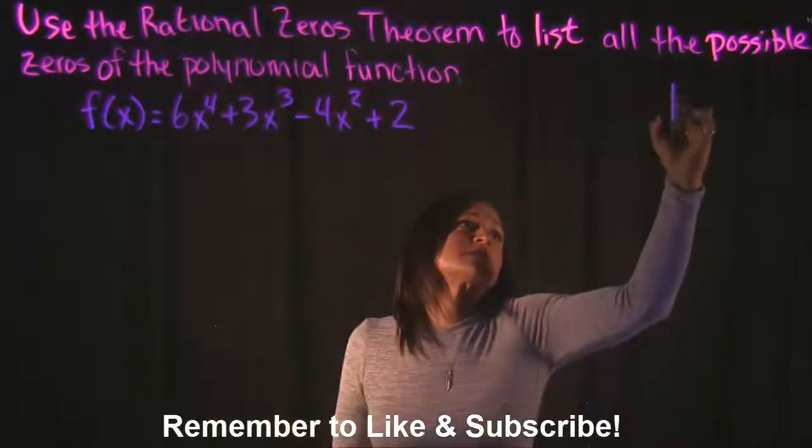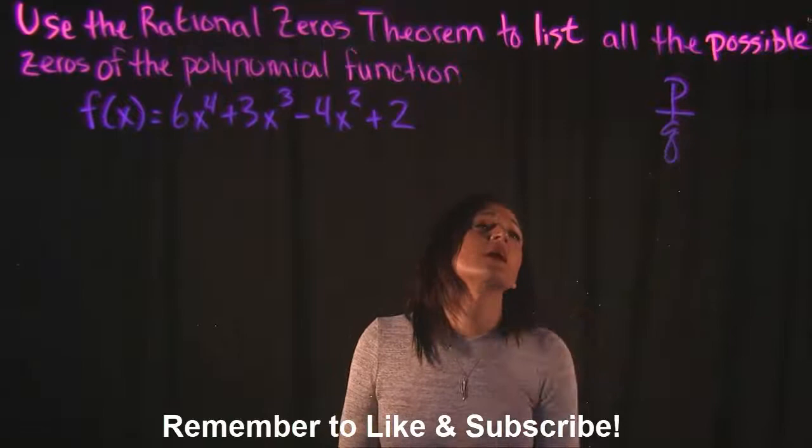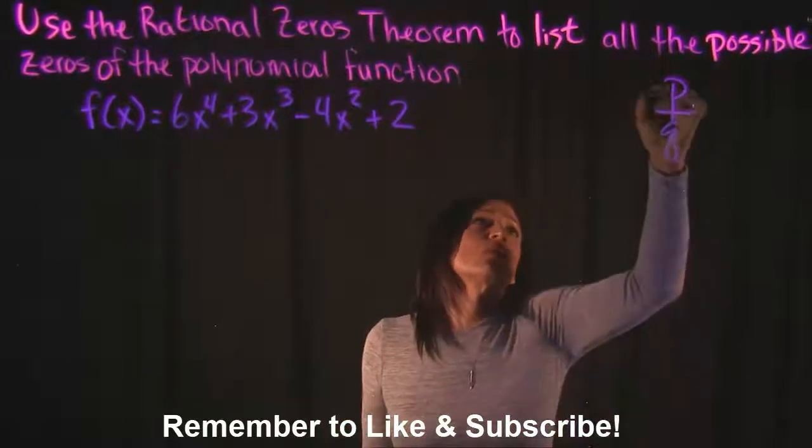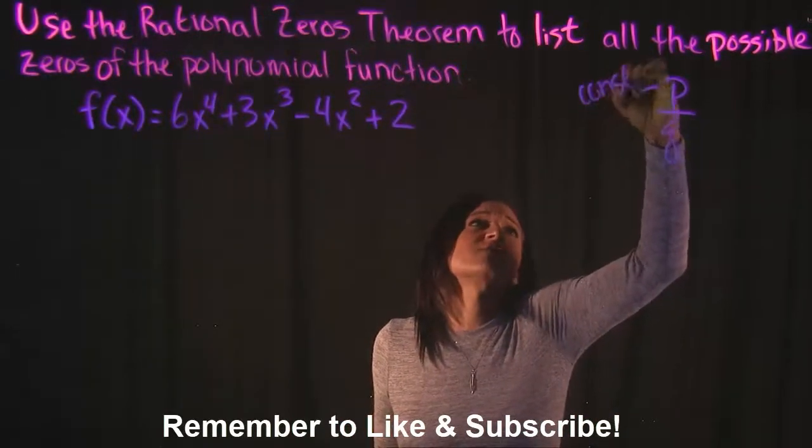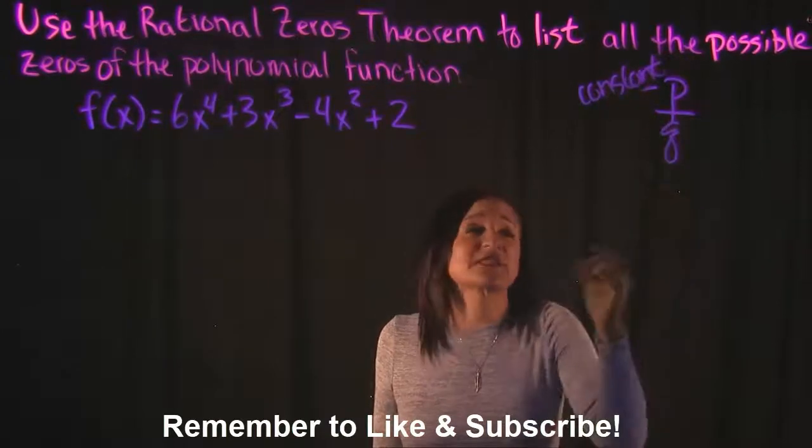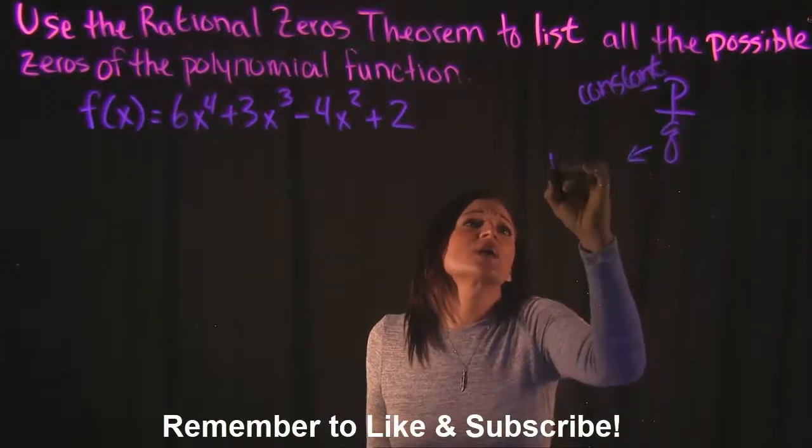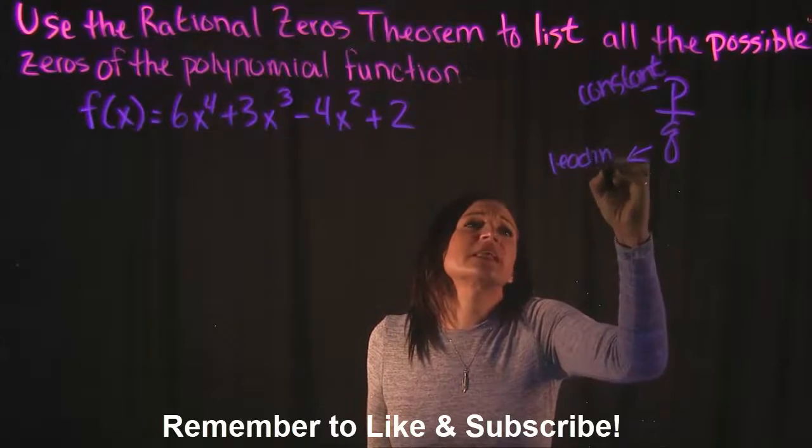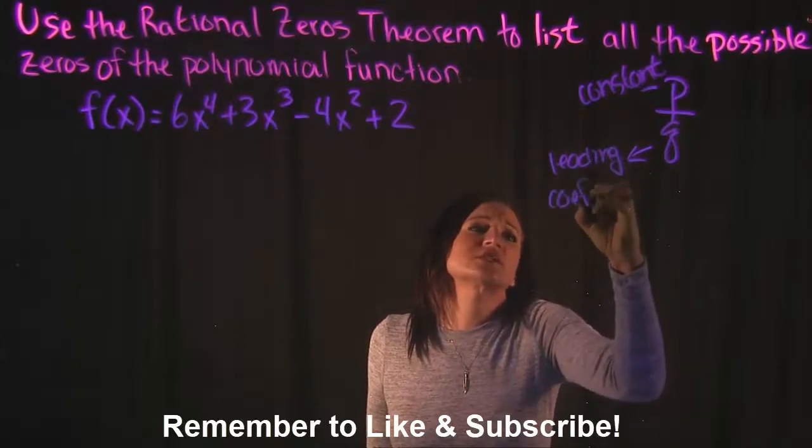And the way that we do that is by using this little mini formula, P over Q, where P represents the constant of the function, typically the last term of the function, and Q represents the leading coefficient.